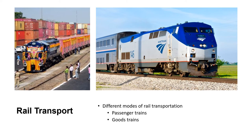Rail transportation. There are two modes of rail transportation — passenger trains and goods trains. Passenger trains are used to transport passengers from one place to another, whereas goods trains are basically designed to transport goods.